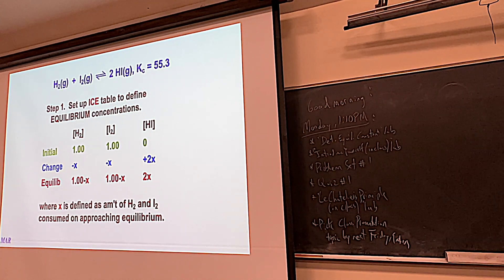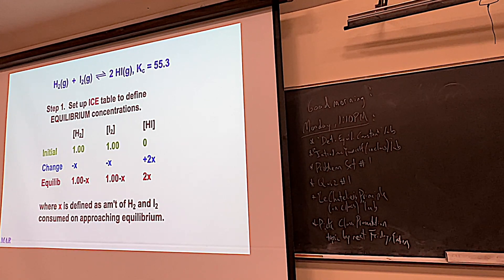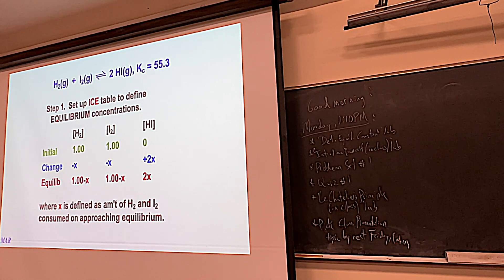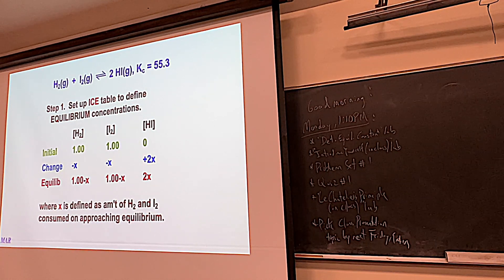At equilibrium, you combine initial and change: 1 minus x for both H2 and I2, and 2x for HI. So we have one equation with one unknown x. In math, if you have one equation with one unknown, you can totally solve it. At equilibrium, HI is 2x and we square it because of the stoichiometric coefficient.